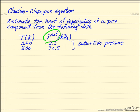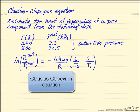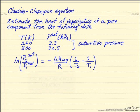So now we're going to use the Clausius-Clapeyron equation. The left side is natural log of the saturation pressure evaluated at temperature T2 divided by the saturation pressure at temperature T1. R is the gas constant and delta H is the heat of vaporization that we're trying to determine.